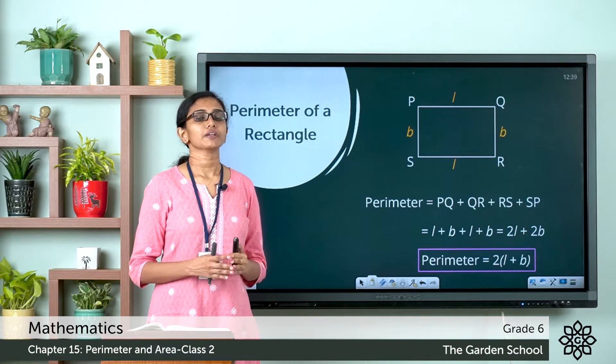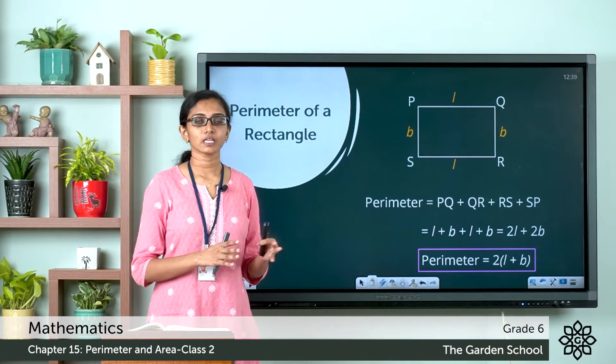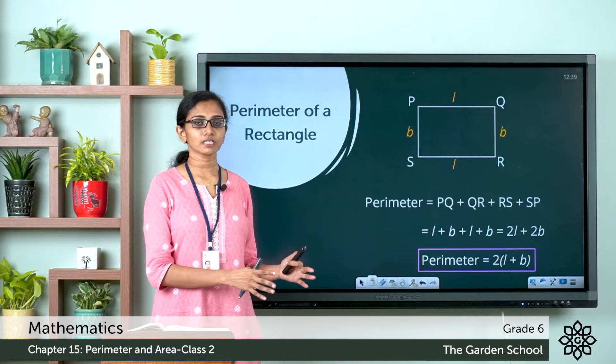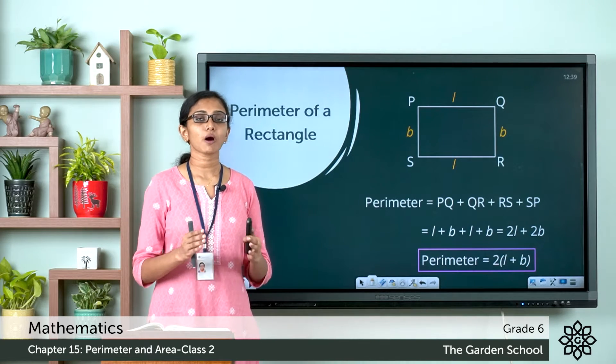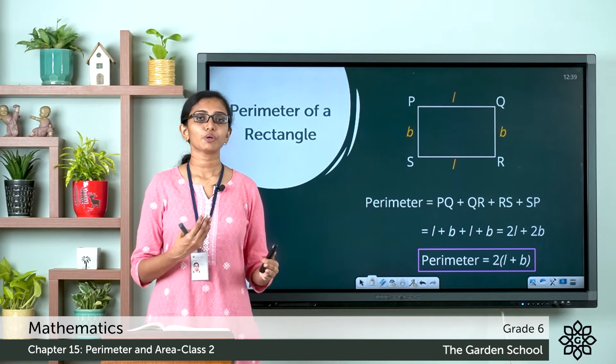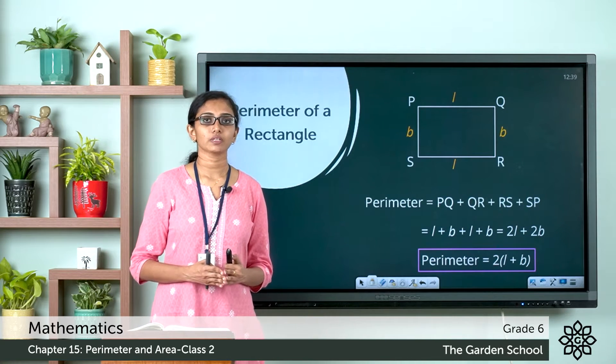Now we need to find out the perimeter of this rectangle PQRS. The perimeter means it is the total length along the boundary of the rectangle. So how do we find out the total length of the boundary?